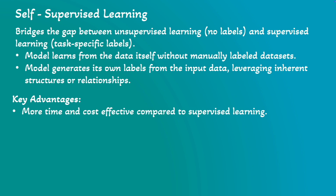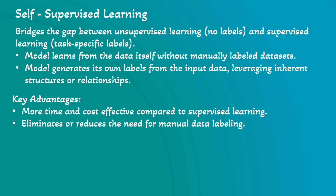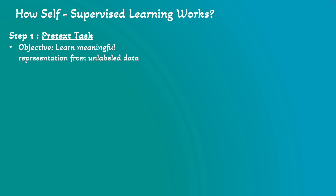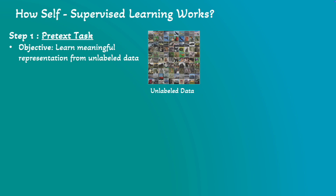In terms of key advantages for self-supervised learning: it is more time and cost-effective compared to supervised learning because you don't have to manually label the data. That eliminates or reduces the need for manual data labeling and reduces reliance on human-annotated datasets. Now let's review how self-supervised learning works. Step one is the pretext task, which is the unsupervised phase. The objective is for the model to learn meaningful representations from unlabeled data. Input data can be unstructured or unlabeled data — images, text, or genomic sequences — and then we create a pretext task where the model predicts part of the data from another part.